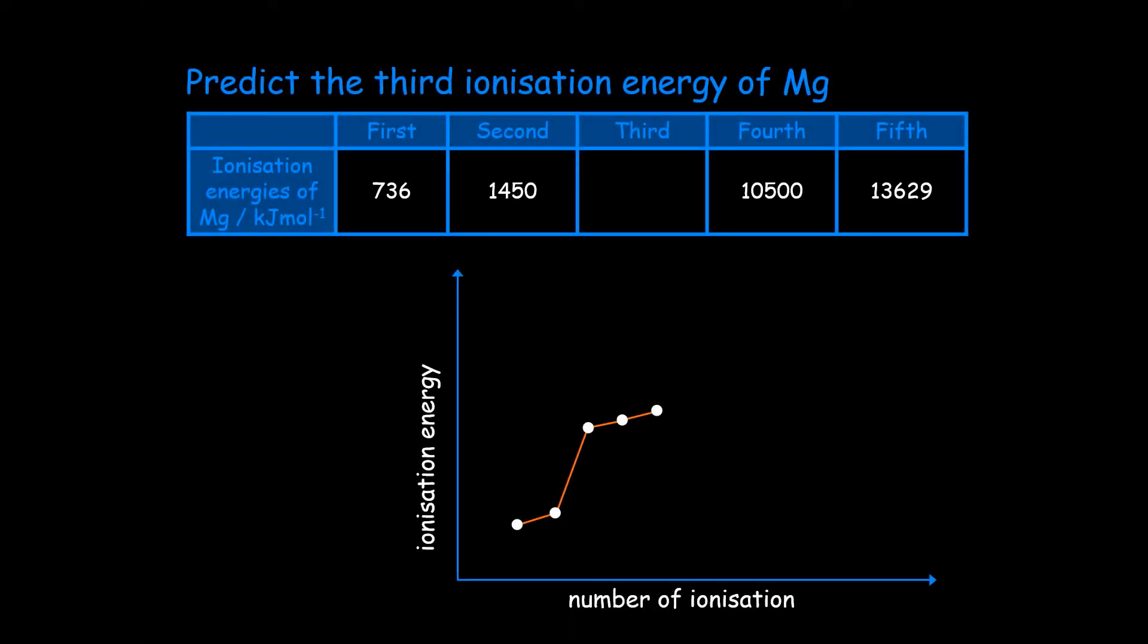So we're looking for the third ionization energy of magnesium. Now we know the fourth ionization energy is 10,500, the fifth is 13,629.